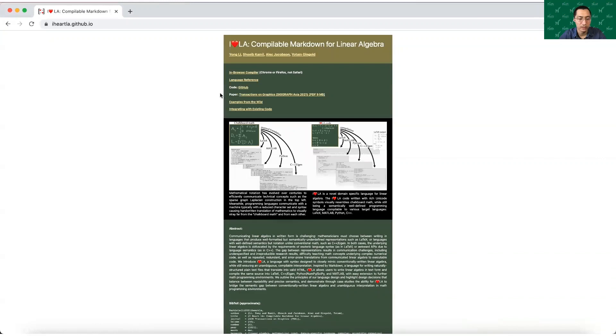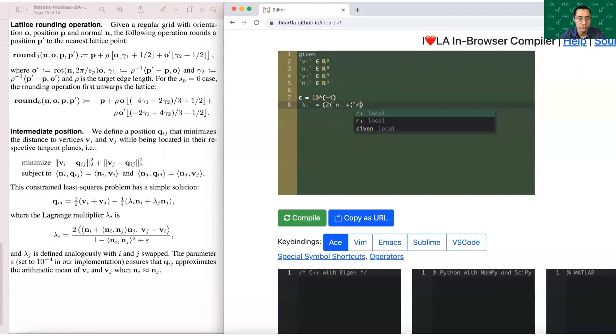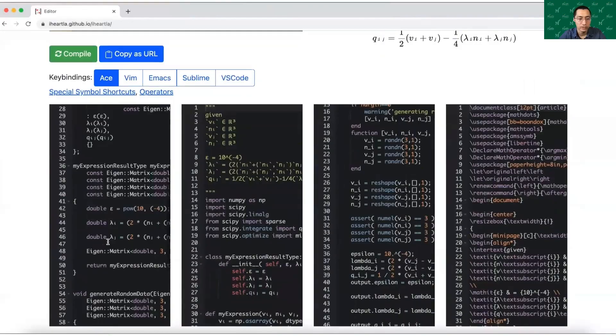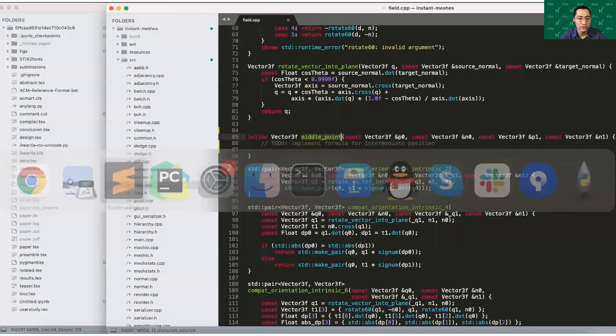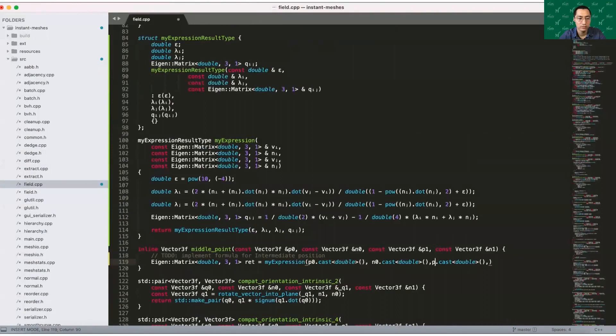The four parameters in the function correspond to v subscript ij and n subscript ij. We can open the editor from the website, and type the formula directly. The editor has conventions for Unicode symbols, so lambda, Unicode subscript ij, epsilon can be typed directly. We compile the source code, and copy the output C++ code snippet to the midpoint function.